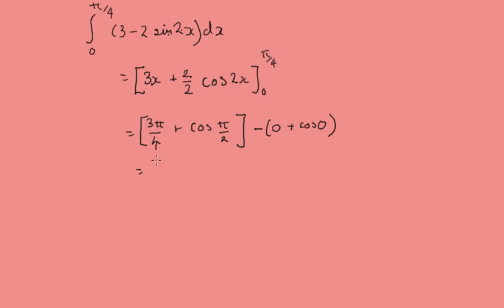That's going to give us 3π/4. The cosine of π/2 is 0, minus, this is 0, the cosine of 0 is 1, so it's going to be minus 1.